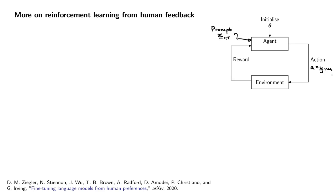Given this prompt — this question — how good of an answer is the action that the agent took? The environment, which is humans, is going to say: this is a really good response to this question — you get rewarded — or this is a really horrible response — you get penalized. And then we want the agent language model, the parameters of that model π, to change in order for high rewards to be obtained and low rewards to not be obtained.